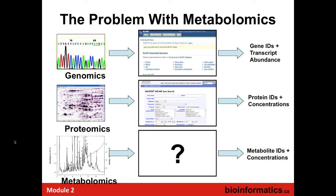Historically with metabolomics, you come up with your chromatogram, NMR spectrum, or mass spectrum, and there really wasn't a place to go. People still today manually go through peaks and match, fit, and look up handmade tables to identify things. This historically was a problem, but there are now tools, resources, databases, and web servers that allow you to do this.